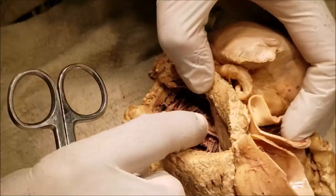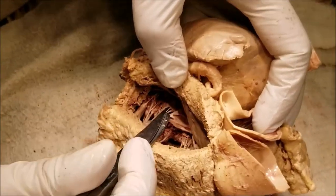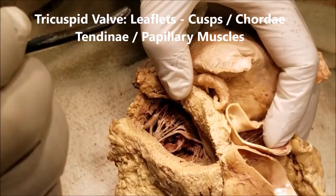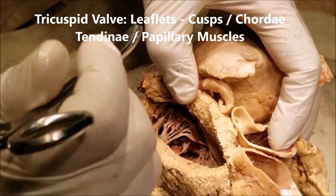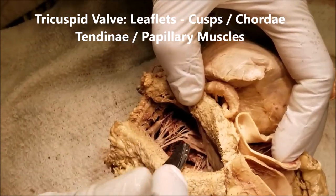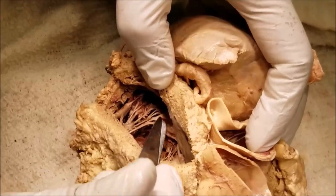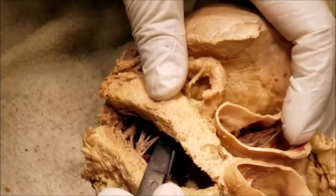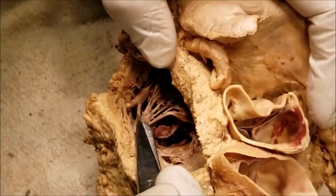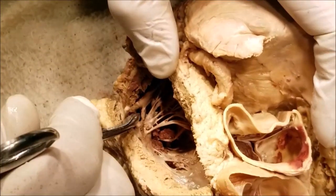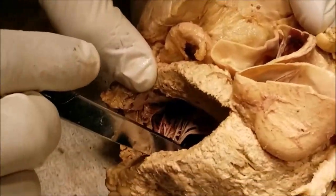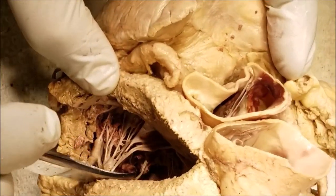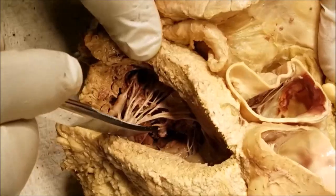Next we notice the leaflets of the tricuspid valve, the chordae tendineae, and the papillary muscles. Because it is the right side, there are three leaflets, three papillary muscles, and three sets of chordae tendineae. The chordae tendineae connect the leaflets to the papillary muscles. This is the anterior leaflet which I have lifted up, with the anterior chordae tendineae attaching to the anterior papillary muscle. Behind this is the posterior valvular leaflet, the posterior papillary muscles, and the posterior chordae tendineae.